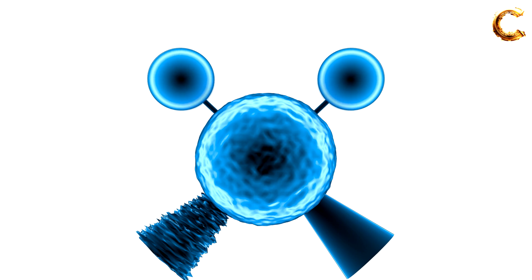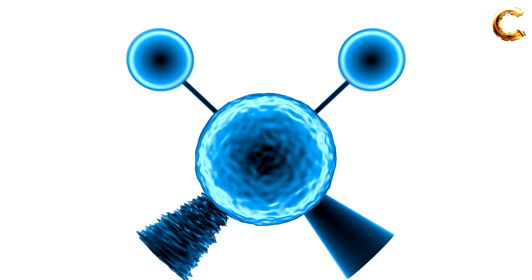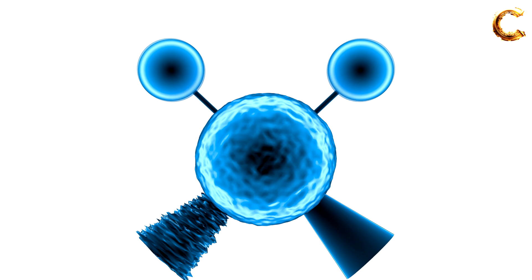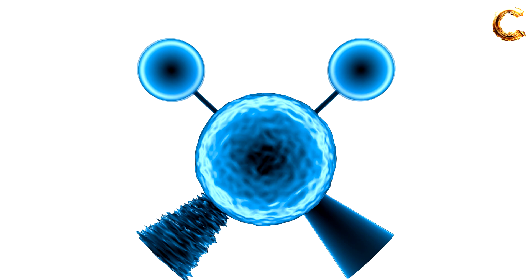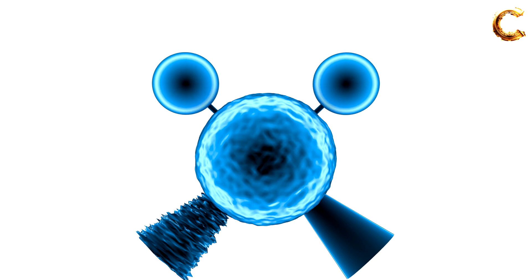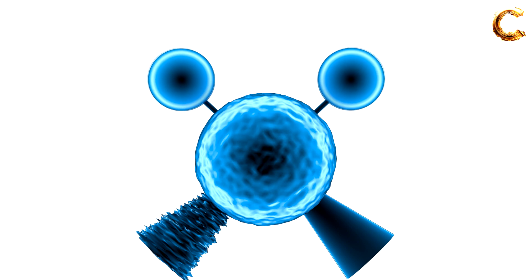For instance, in a diatomic oxygen molecule, the symmetric stretching involves both oxygen atoms moving toward and away from each other along the bond axis. In more complex molecules, such as water, the symmetric stretching of the OH bonds contributes to specific absorption peaks in the IR spectrum.